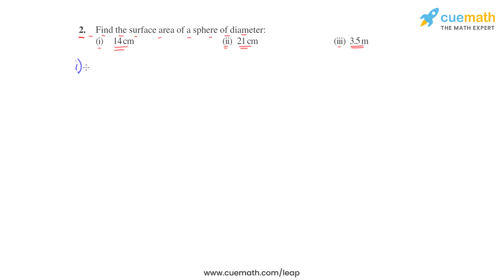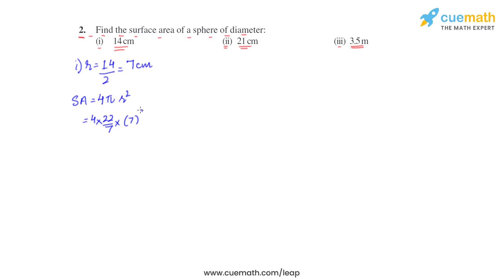For the first part, radius will be half of diameter, that is 14 by 2, which equals 7 centimeters. The formula for surface area of a sphere is 4 pi r squared. So this becomes 4 into 22 by 7 into 7 squared, which comes out to be 616 square centimeters.